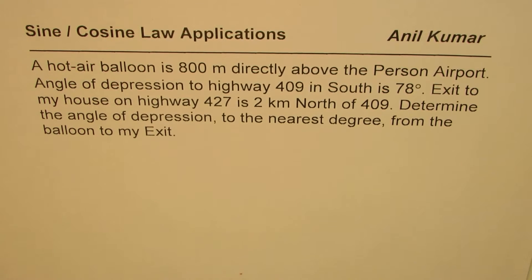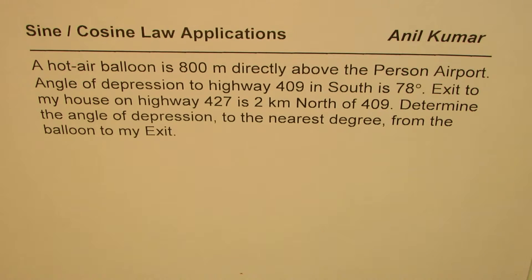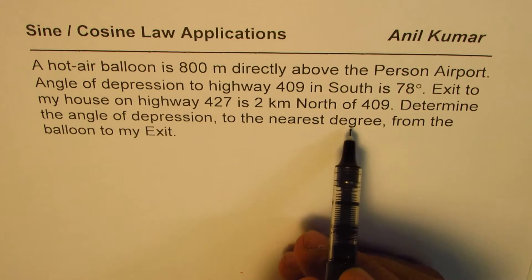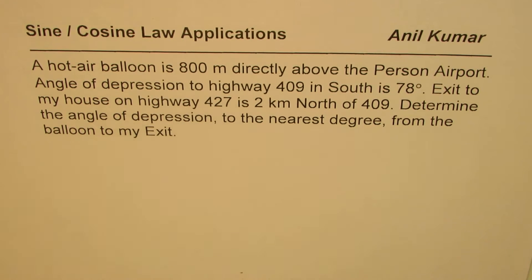I'm Anil Kumar and here is an application of sine or cosine law. The question is: a hot air balloon is 800 meters directly above Pearson Airport. The angle of depression to highway 409 in the south is 78 degrees. The exit to my house on highway 427 is 2 kilometers north of 409. Determine the angle of depression to the nearest degree from the balloon to my exit.